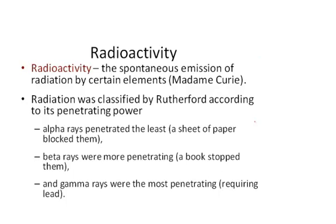So that's where we get the alpha, the beta, and the gamma. The alpha penetrated the least. If you held a sheet of paper between the source and a detector, you could trap the alpha particles.